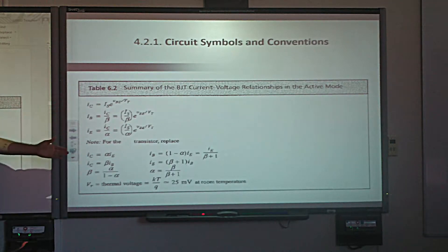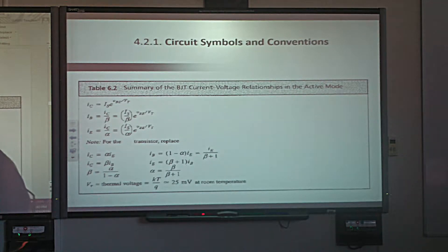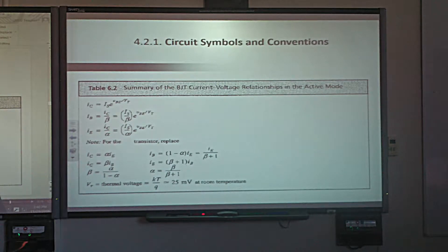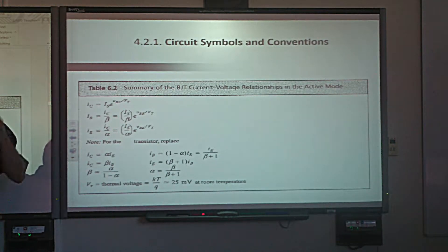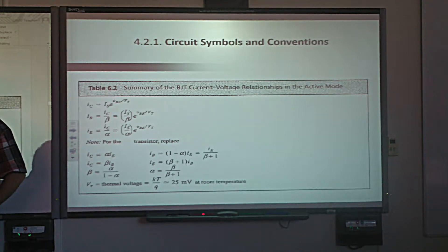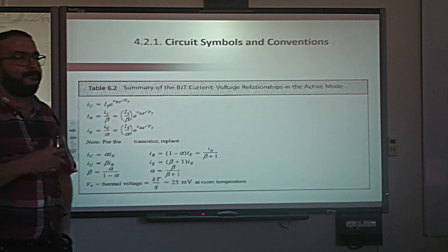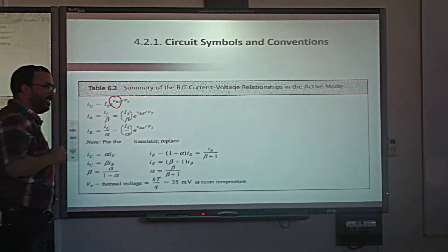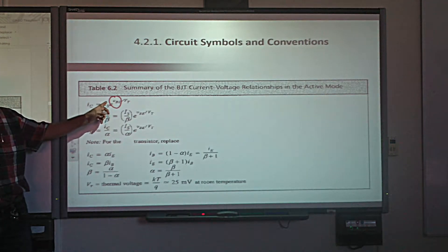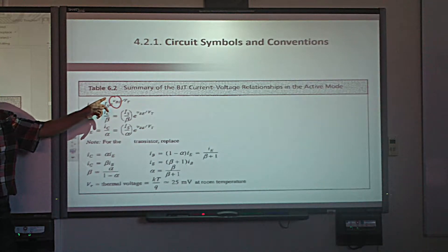These equations are used for the BJT — both NPN and PNP. The collector current IC is proportional to e^(VBE/VT). When we use this equation, it applies to NPN, because VBE being positive means the base is bigger than the emitter — consistent with NPN forward bias. The equation uses VBE for NPN. For PNP, we replace VBE with VEB.